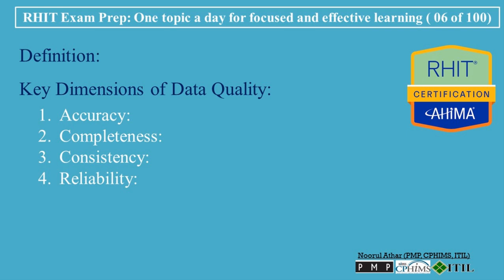4. Reliability. Reliable data is trustworthy and can be depended upon to make informed decisions. This involves having a standard process for data collection and management that minimizes errors. 5. Relevance. Data must be relevant to the context in which it is used. Irrelevant data can clutter decision-making processes and detract from important insights. For example, only current medications and relevant medical history should be documented when treating a patient.